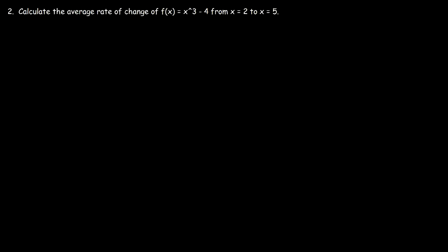Number 2. Calculate the average rate of change of f(x) = x³ - 4 from x = 2 to x = 5. So it's going to be f(b). Well first we need to know what a and b are.